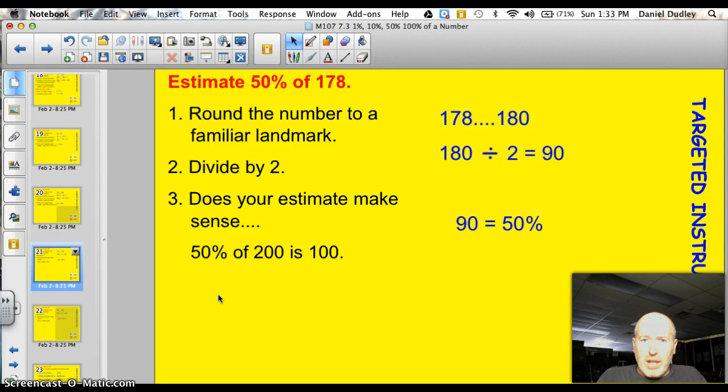I need you to find 50% of 178. Well, first of all, just round to a familiar landmark. So, I took 178 and I rounded to 180. I think you could have gone to 200, but I went to 180. The next step is just divide by 2, because 50% is half. So, 180 divided by 2 is 90, because I know that 18 divided by 2 is 9, so 180 divided by 2 is 90. And, I have 90 equals 50%, or 50% equals 90. Does this answer make sense? Well, yes, it does, because 50% of 200 would be 100. So, 50% of 180, yeah, 90.